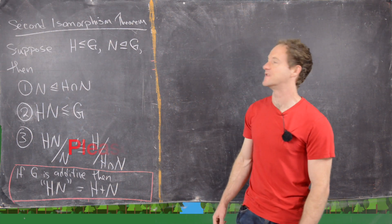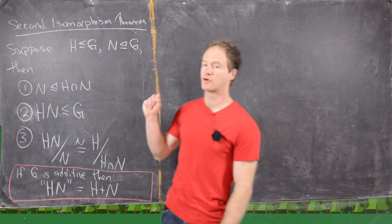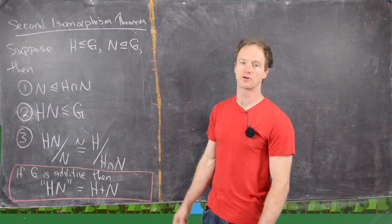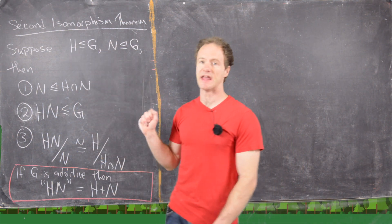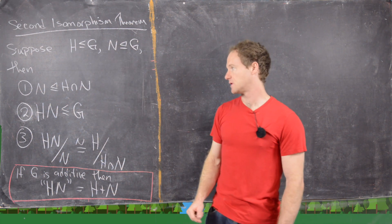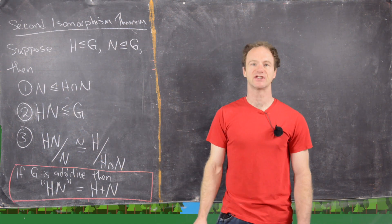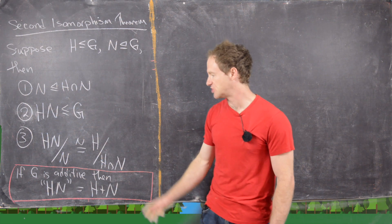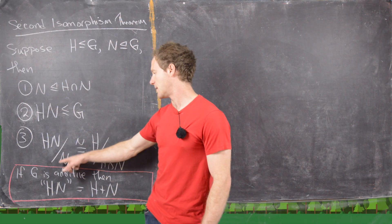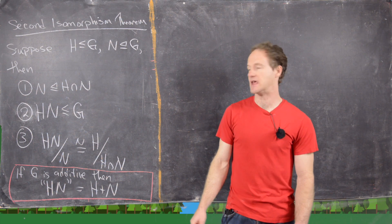In this video we're going to look at an application of the second isomorphism theorem. So let's recall what it says. If we have a group G, a subgroup H, and a normal subgroup N, then we have three results: N is a normal subgroup of H intersect N, HN is a subgroup of G, and most importantly, HN mod N is isomorphic to H mod H intersect N.